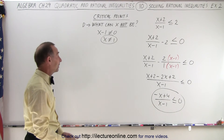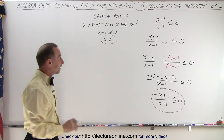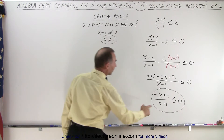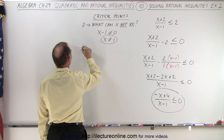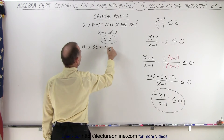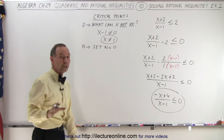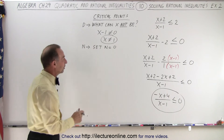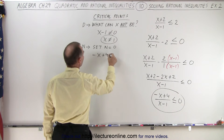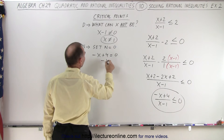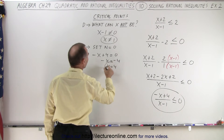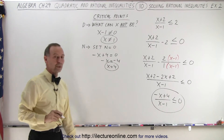That's an interesting way of looking at it — x cannot equal one is the critical point. The next critical point is found by setting the numerator equal to zero, because if the numerator is zero, the whole fraction equals zero. So negative x plus four equals zero, giving minus x equals negative four, or x equals four. That's our second critical point.